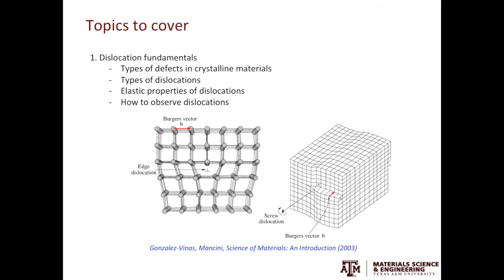The following video clips can be grouped into four parts. In the first part, we'll cover dislocation fundamentals. We'll talk about the types of defects in crystalline materials from zero-dimensional to three-dimensional, the types of dislocations, elastic properties of dislocations, and how we can observe dislocations using different characterization techniques. If you have taken an undergrad materials science class, you can see that the dislocation on the left is an edge dislocation and the one on the right is a screw dislocation.